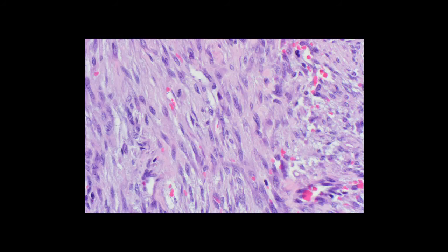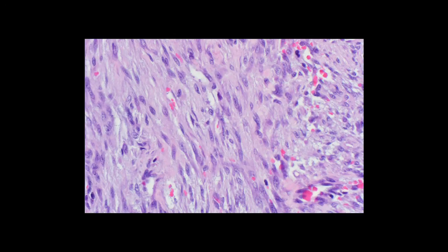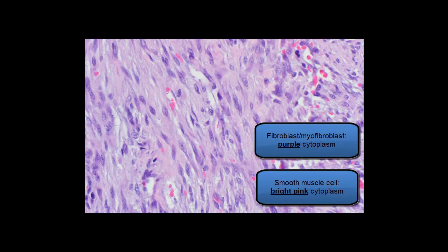Here's a high-power view of the cells. You can see that they have very bland nuclei with open chromatin and punctate nucleoli, and you do not appreciate very much nuclear atypia or hyperchromasia, as you would see in a sarcoma. The cells that comprise nodular fasciitis are actually plump myofibroblasts, and you can appreciate that each cell has a purple cytoplasm that extends from each end of the nucleus. The presence of a bluish or purplish cytoplasm in a spindle cell helps distinguish a fibroblast or myofibroblast from a smooth muscle cell, which has a bright pink cytoplasm.